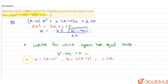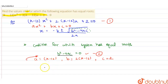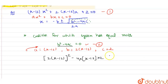Now put the values of a, b, and c into the condition equation. The formula is b squared minus 4ac equals zero: 2(k minus 12) whole squared minus 4 into (k minus 12) into 2 equals zero.